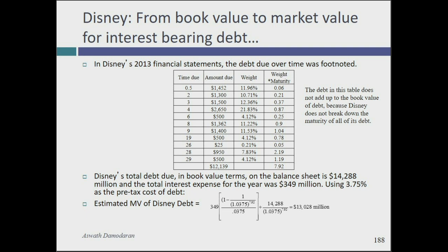I'll give you a simple trick to convert book debt to market debt: treat all of the company's debt as a single bond. Disney has $14.288 billion in book debt — treat that as face value. Their interest expenses are $349 million per year — treat that as the coupon. Their debt matures in about 7.9 years. So I price this as a bond with a $14.3 billion face value, a $349 million coupon, and a 7.9-year maturity, discounting at the current market interest rate. You'll notice why I sequenced things the way I did.